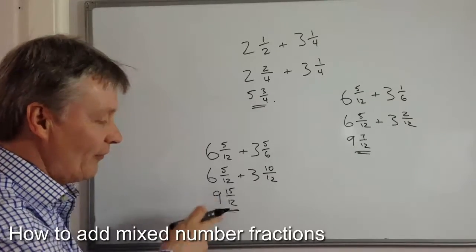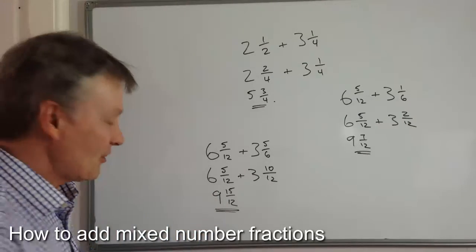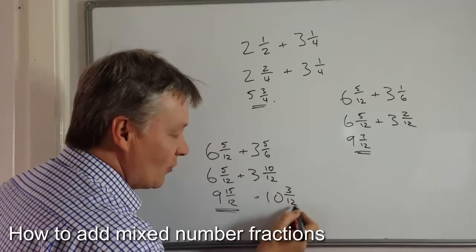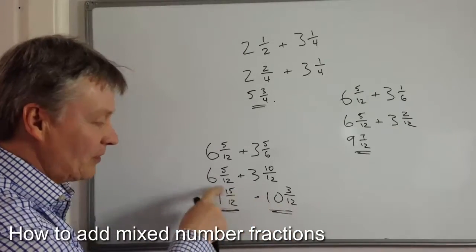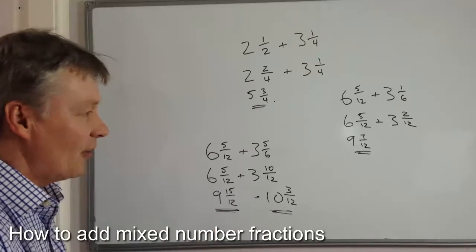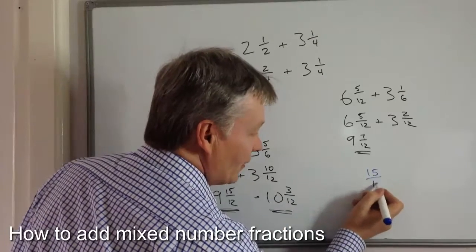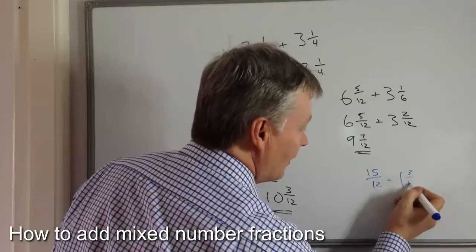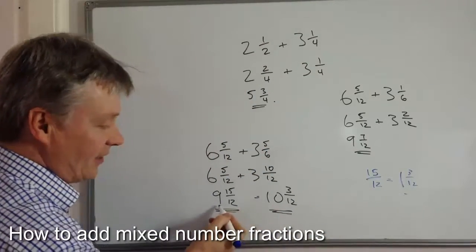And what we're going to do is we're going to take twelve of those twelfths and make that into a whole. So what we end up with is ten and three twelfths left over. And you need to have a look at some of the other videos about dealing with top-heavy fractions. It's this fifteen over twelve that you need to deal with. So if I just explain that over here, I've got fifteen over twelve is exactly the same as one whole and then three twelfths. So what I've done is I've taken that one whole and I've added it to this nine. And that then becomes ten and three twelfths.